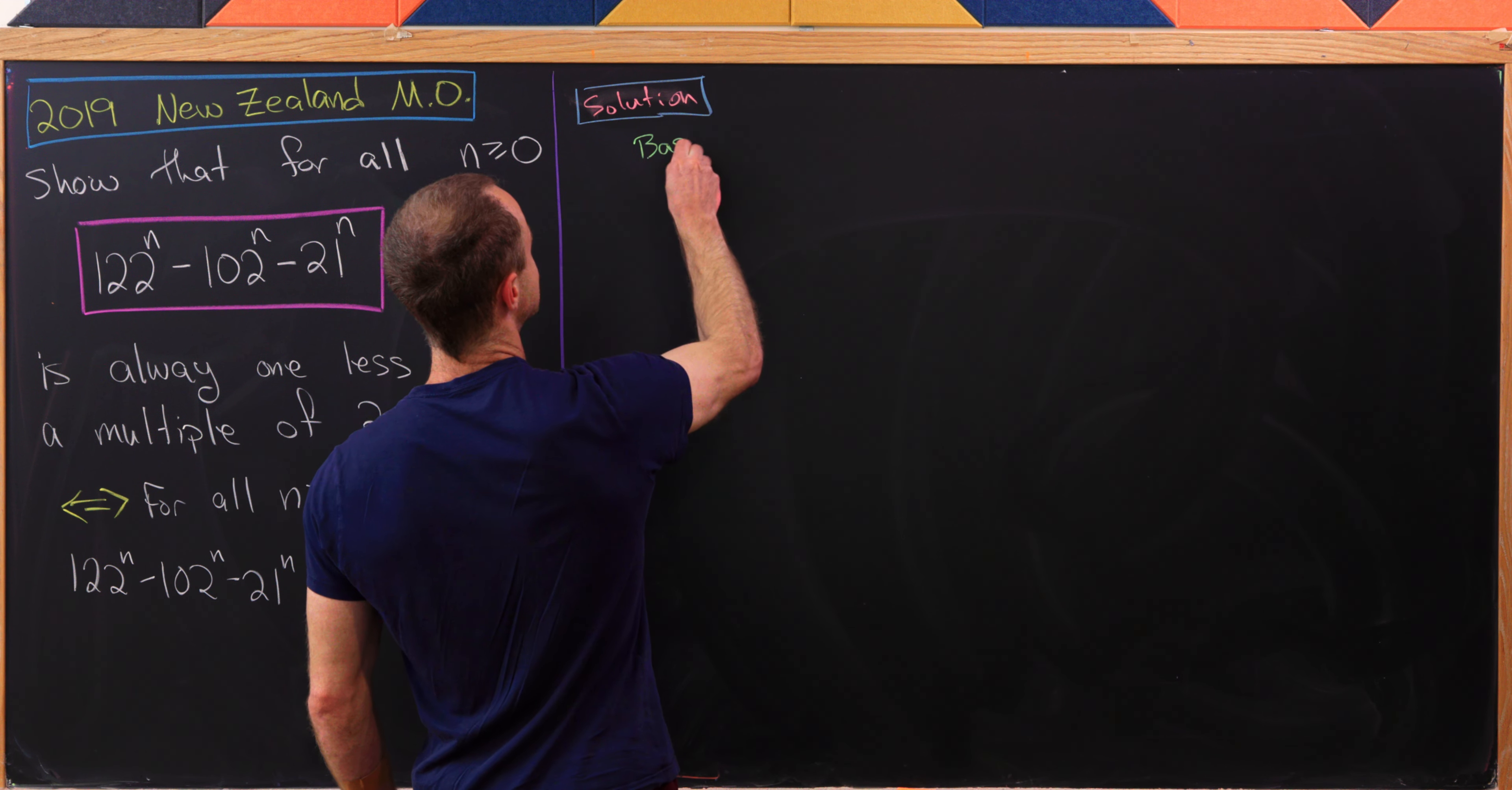But check it out. We have 20 plus 101. That's 121 minus 122. That's exactly negative 1 mod 2020. But that's exactly what we wanted over here. So that finishes this problem. And that's a good place to stop.